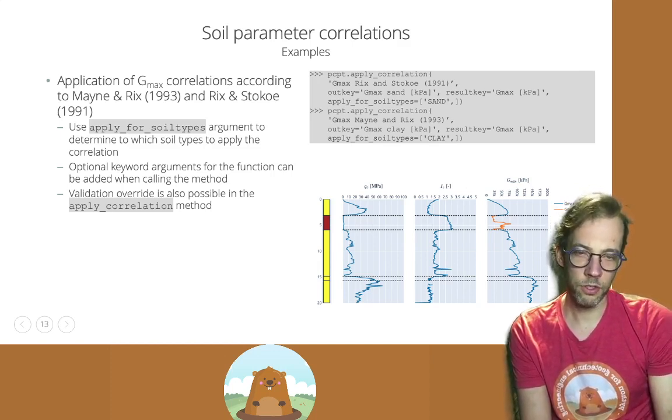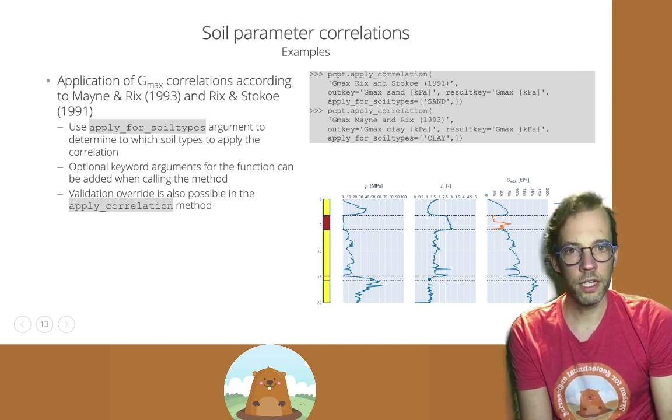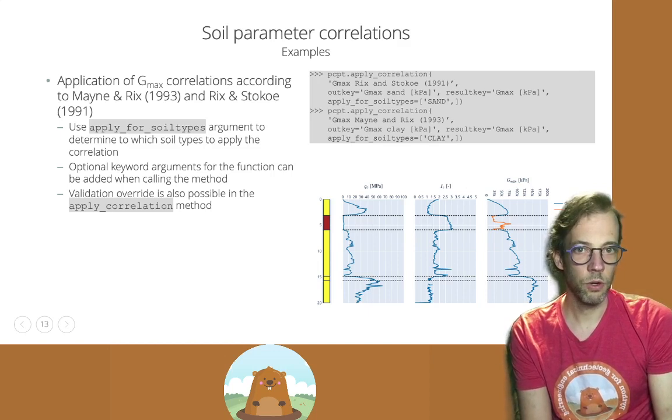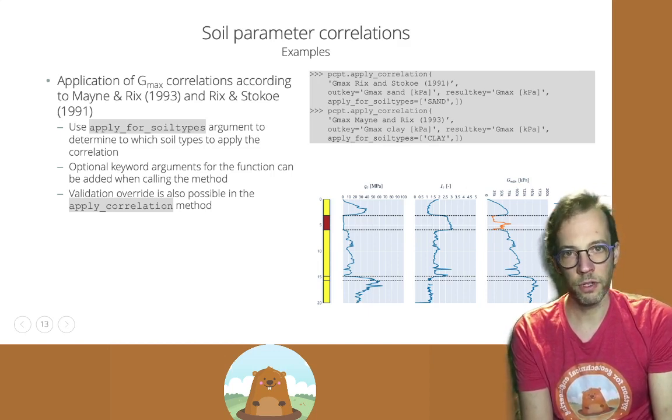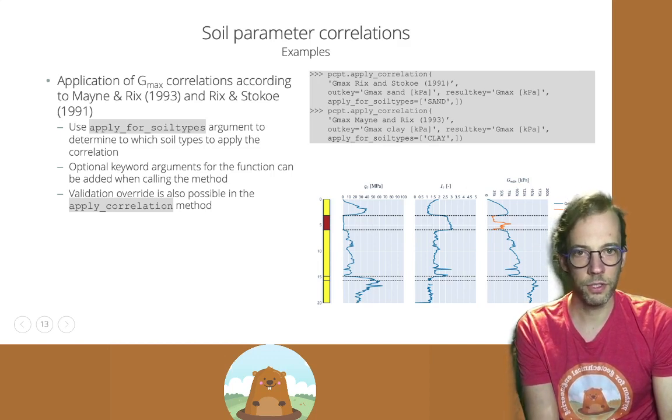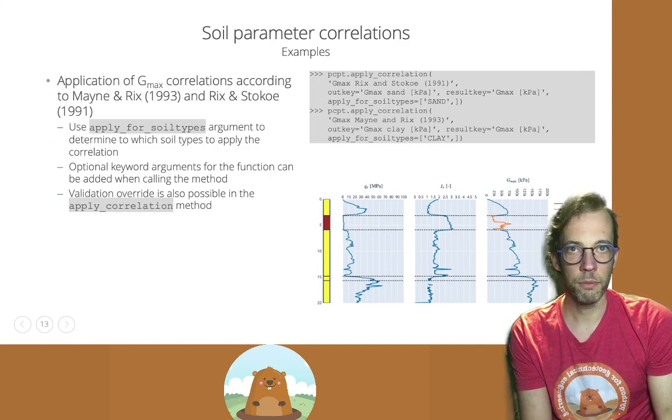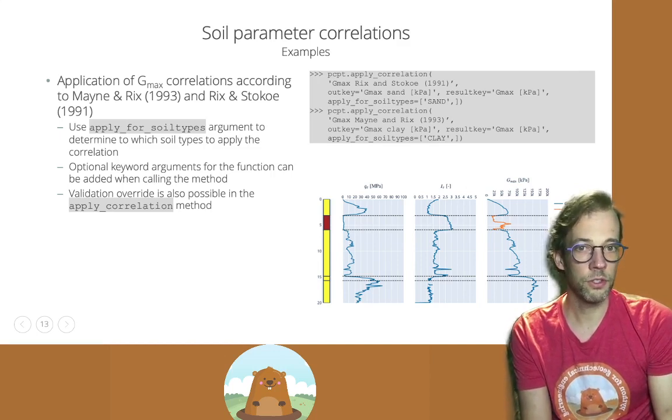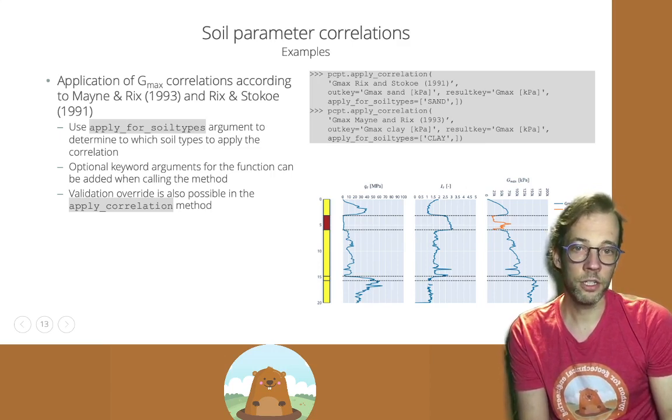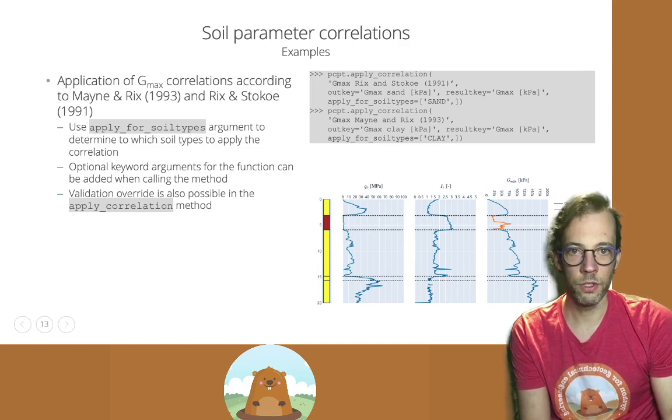Here's another example on how we can derive GMax from CPT data. And we can do that for different soil types with different soil profiles. That's where the keyword apply for soil types comes in, because certain correlations have only been developed for cohesionless soils. Others have been developed for cohesive soils.